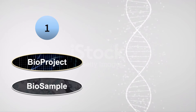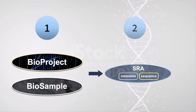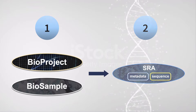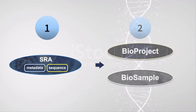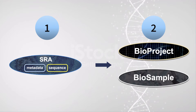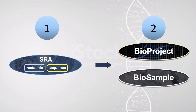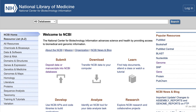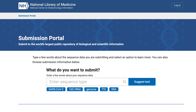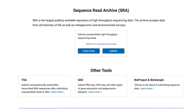You can create bioproject and biosample submissions before creating an SRA submission, or you can start an SRA submission and create bioproject and biosamples as part of the SRA submission. That's what I'll be doing in this demonstration. To get to the SRA submission wizard page, you can start on the NCBI homepage. Click Submit, then scroll down to the SRA section and click the Submit button.